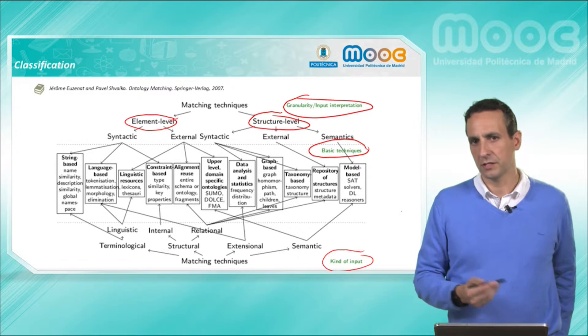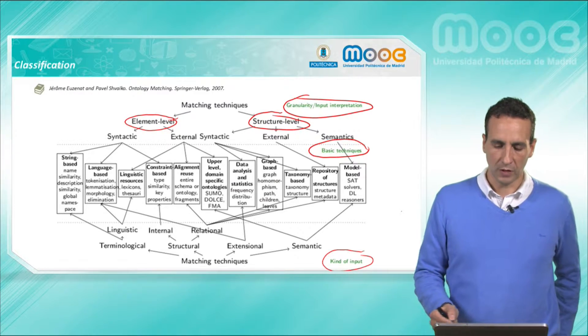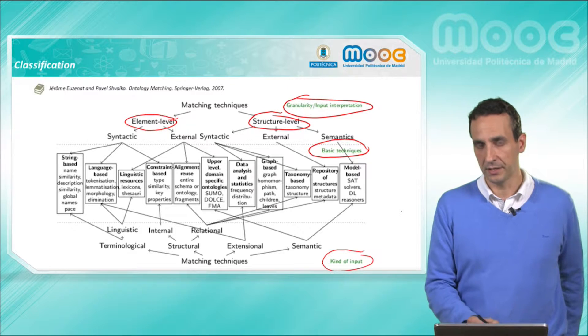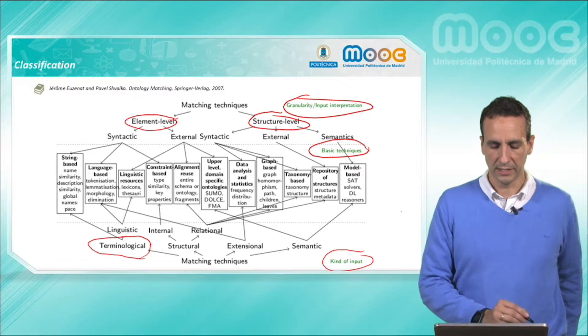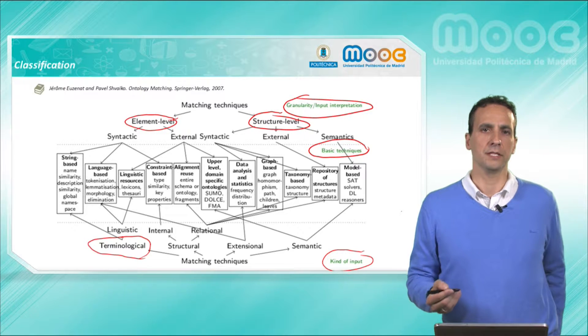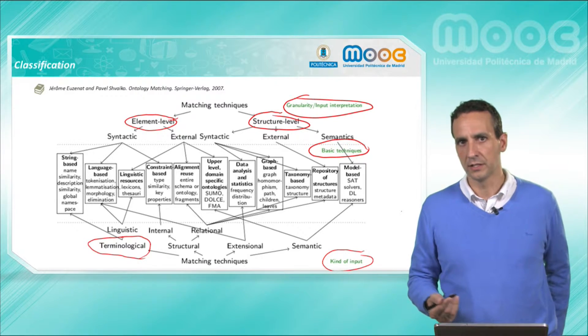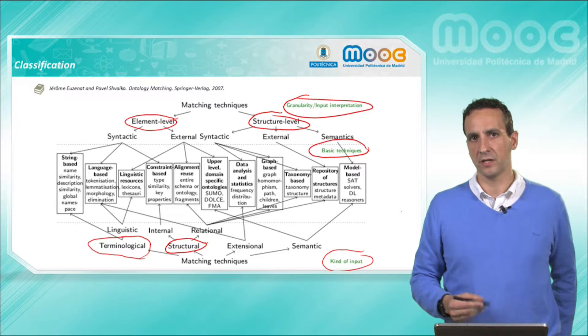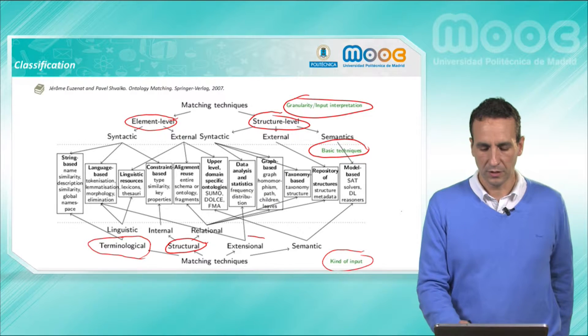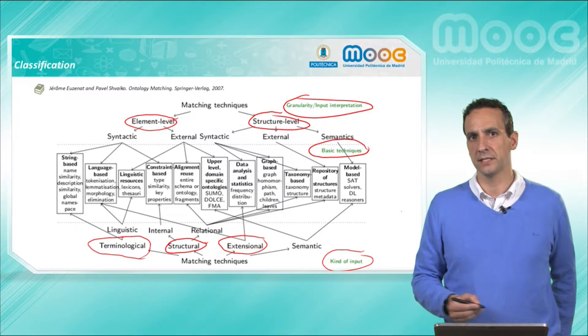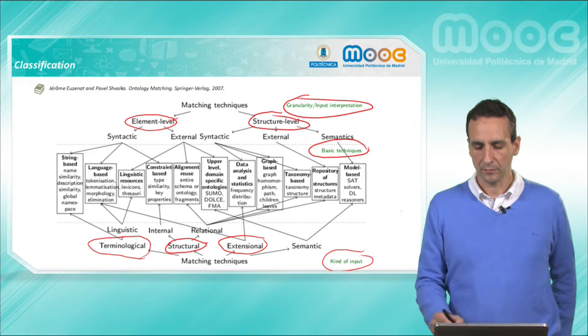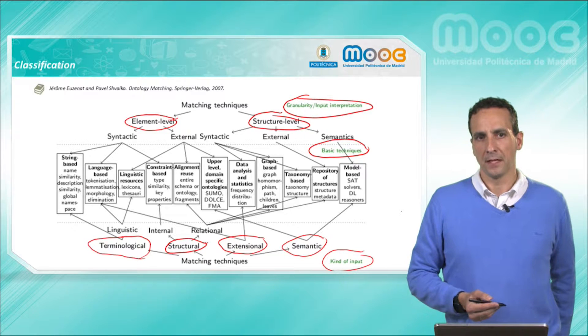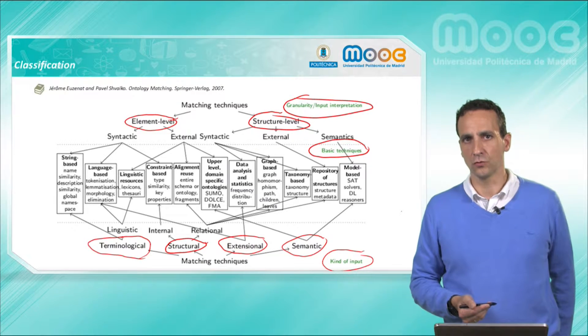The second classification scheme organizes the techniques according to the type of input. At the first level, it is divided into terminological techniques, basically based on the expressions in natural language associated to the ontology, also the structural techniques that explore the structure of the ontology, extensional techniques that explore the instances associated to the ontology, and finally semantic techniques that consider the semantic model of the ontology to infer and detect alignments between the two ontologies.